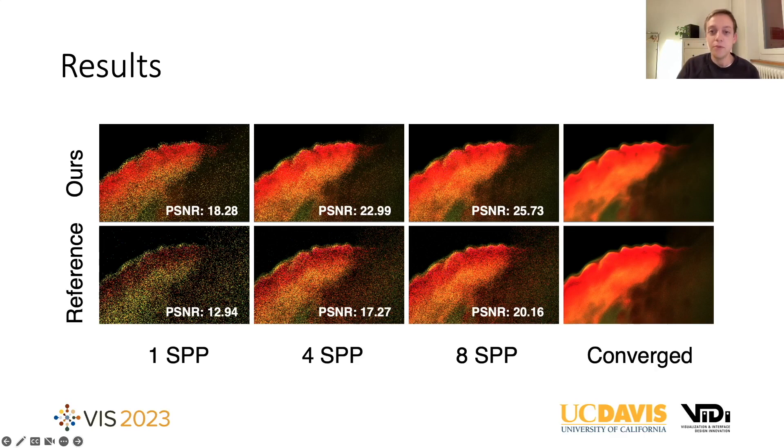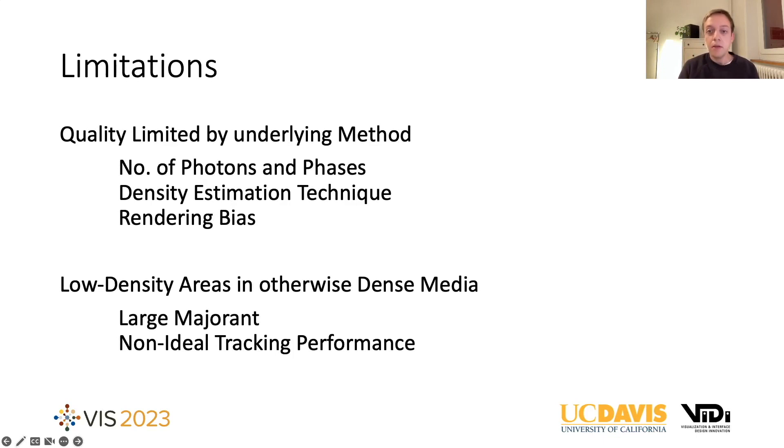And this already brings us towards the end of my talk. Let's discuss limitations. The quality of the photon field depends to a large part on the underlying conditions, such as the number of photons that we trace, or how granular the non-isotropic scattering is trained. Another important factor is the photon density estimator used to gather photons for training. We use a very basic technique for this work, and this can definitely be improved by implementing more advanced techniques.